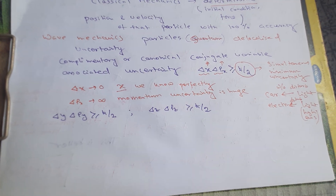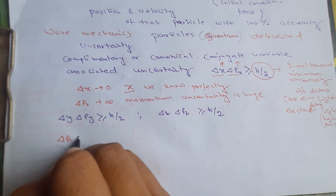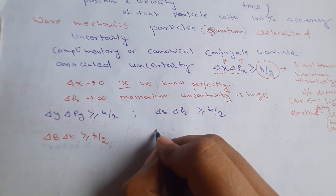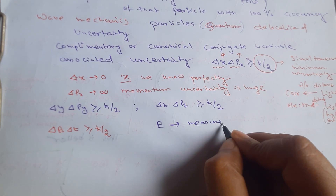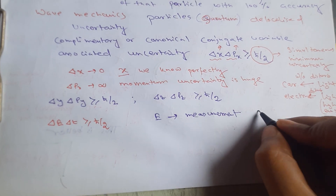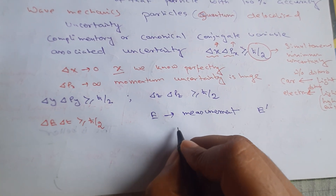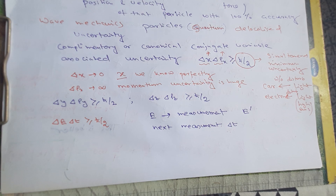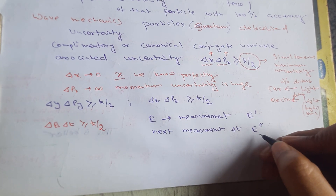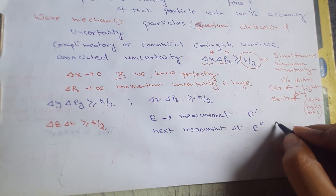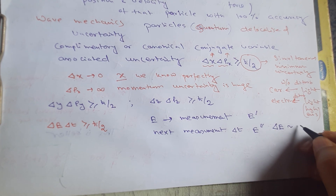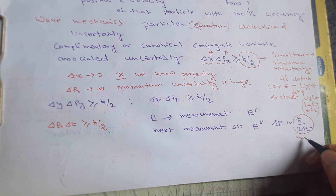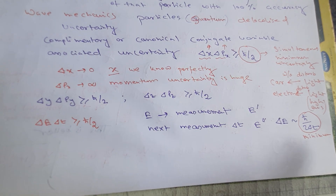Similarly, there are other conjugate variables: energy and time, for which the uncertainty principle gives delta E times delta t greater than or equal to h-bar over 2. Suppose you do an energy measurement of a system and get some energy E prime. If you then do the next measurement within a time delta t and get E double prime, the difference between E prime and E double prime — delta E — will be a minimum of h-bar over 2 delta t. It can be more, but that is the minimum.